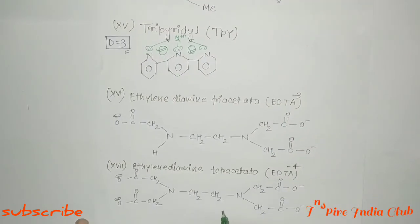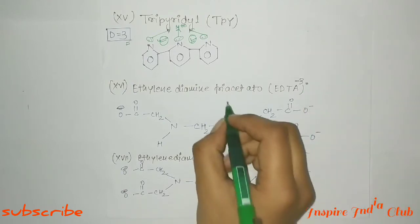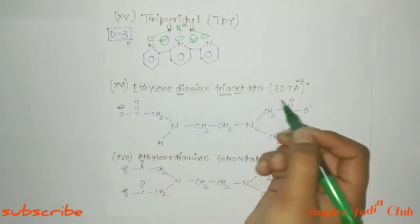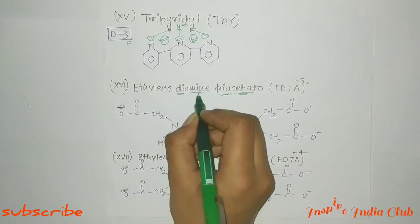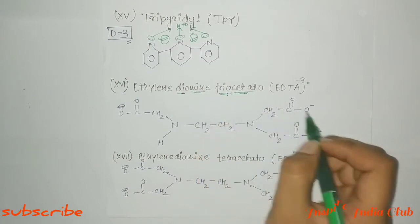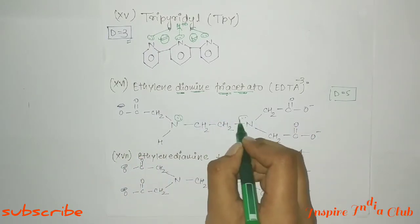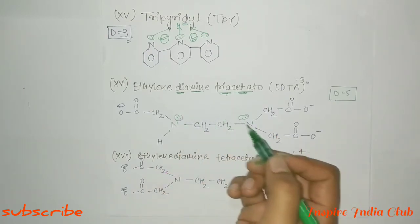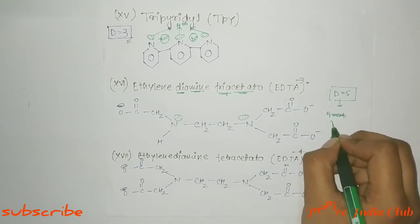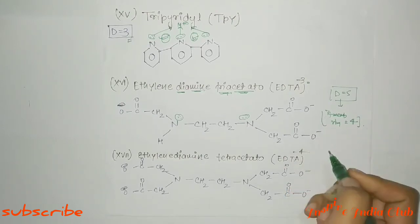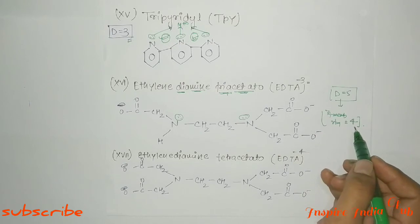Next is EDTA. If EDTA has a minus 3 charge — ethylene diamine triacetate — it has 2 amine (nitrogen) groups and 3 acetate groups, giving 3 oxygen donors and 2 nitrogen donors, totaling 5 donor sites. Denticity is 5, with 5-member ring formation giving stability. There is also a variant where denticity is 4.